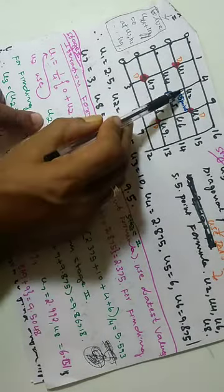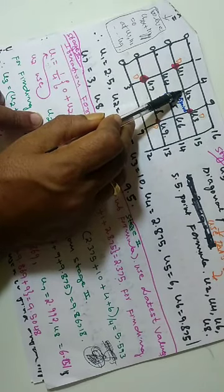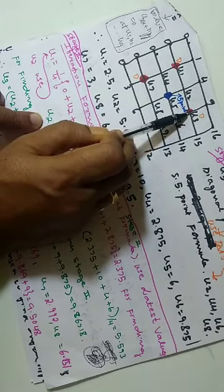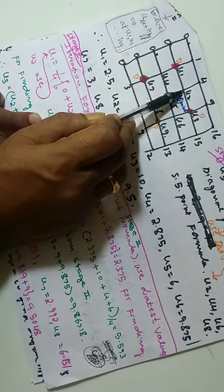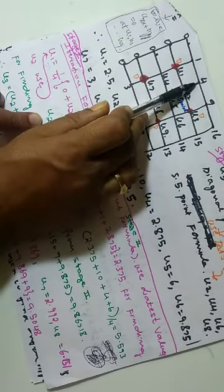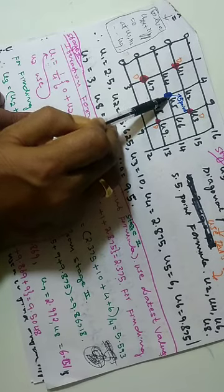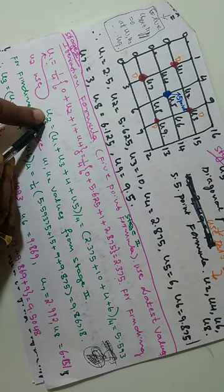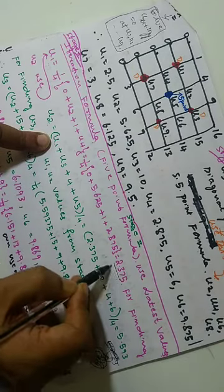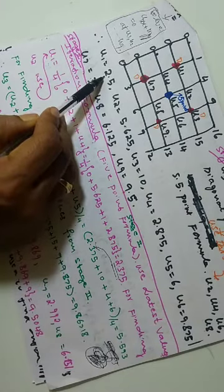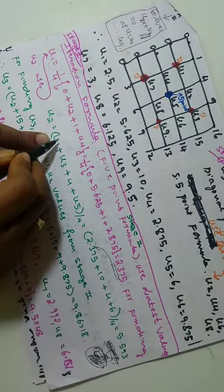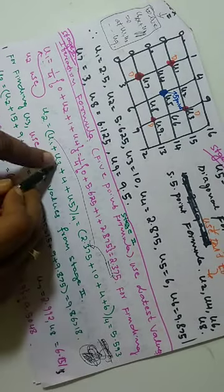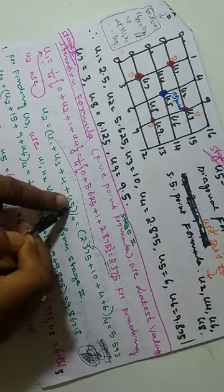For calculating u2, use the standard 5-point formula: left point u1, right point u3, upper point u4, lower point u5. Now, for u1 in this formula, you must use the latest value 2.375, not the old value 2.5 — 2.375 is the latest. So for u1 I substitute the latest value; u3 gives 4, u5 gives 6.